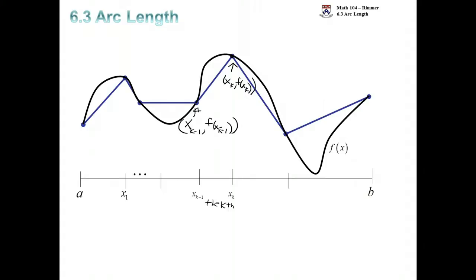We know how to find the distance between two points. That'll be how long this line segment is. This represents the change in x, and this represents the change in y. So let's get the distance formula. We subtract the x's and square, plus subtract the y's and square.